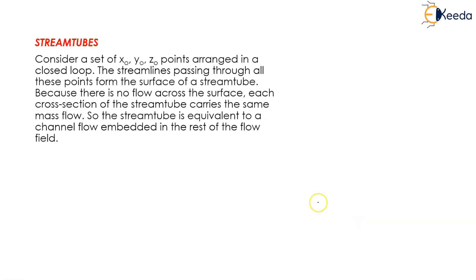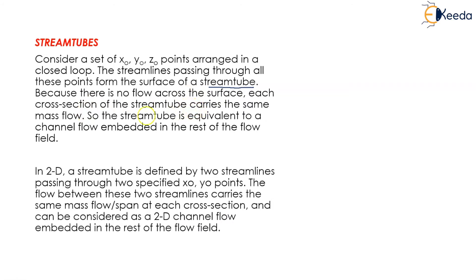Stream tubes. For three dimensions we have a set of x naught, y naught, and z naught points arranged in a closed loop. The streamlines passing through all these points form the surface of a stream tube. Because there is no flow across the surface, each cross section of the stream tube carries the same mass flow.